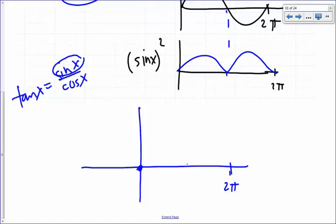Cosine becomes 0, right? So at π over 2, this goes to 0, so if you divide by 0, you get a very large number, so the function goes up, so it goes to infinity.